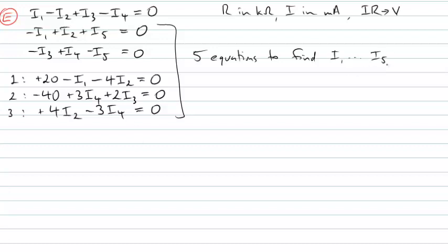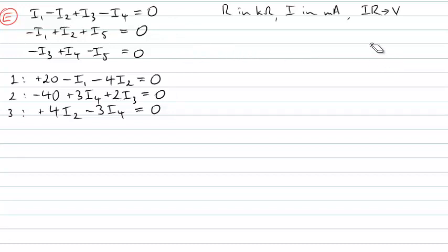We're looking for I5, so we want to keep eliminating other currents until only I5 remains — a substitution and elimination method. Identifying what each equation contains: the second node equation has I1, I2 and I5; the third node equation has I3, I4 and I5; loop equation one has just I1 and I2; loop equation two has I4 and I3; and loop equation three has I2 and I4.